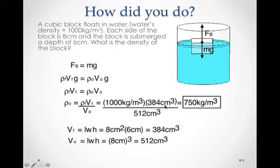Since only six centimeters of it, it's only six centimeters deep. To find the volume of the displaced water, we take the area of the block—eight centimeters by eight centimeters—and then multiply by the amount that it was submerged, six centimeters.